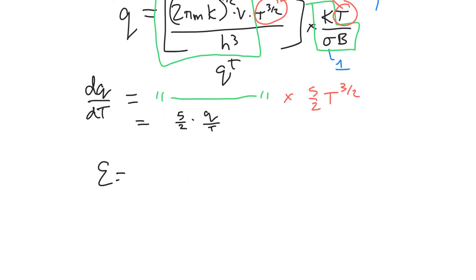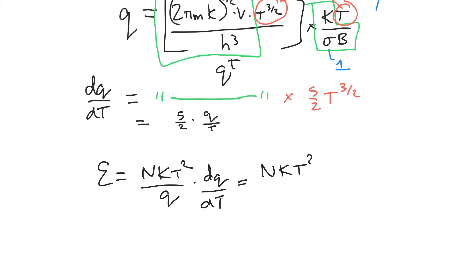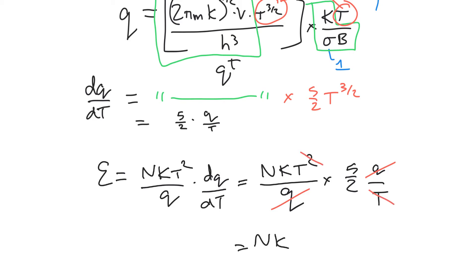If we want the energy, we know E = N k T² / Q × dQ/dT. We have N k T² / Q, and we found the derivative is (5/2) Q / T. Just like before, the partition function cancels and one of the T's cancels out, giving N k T × 5/2.